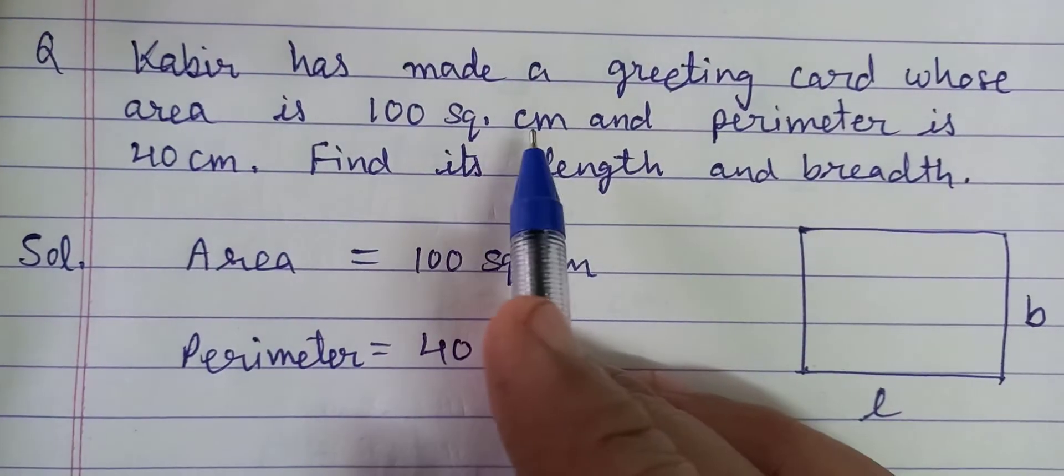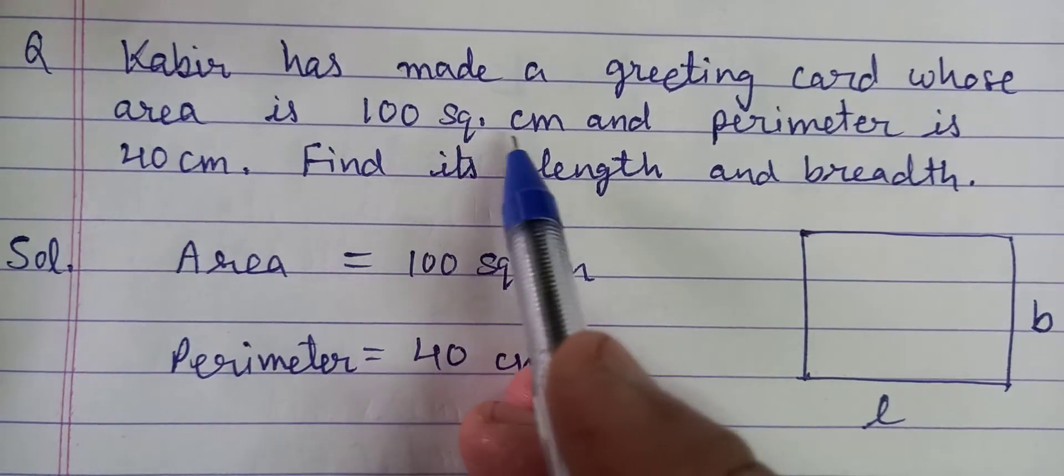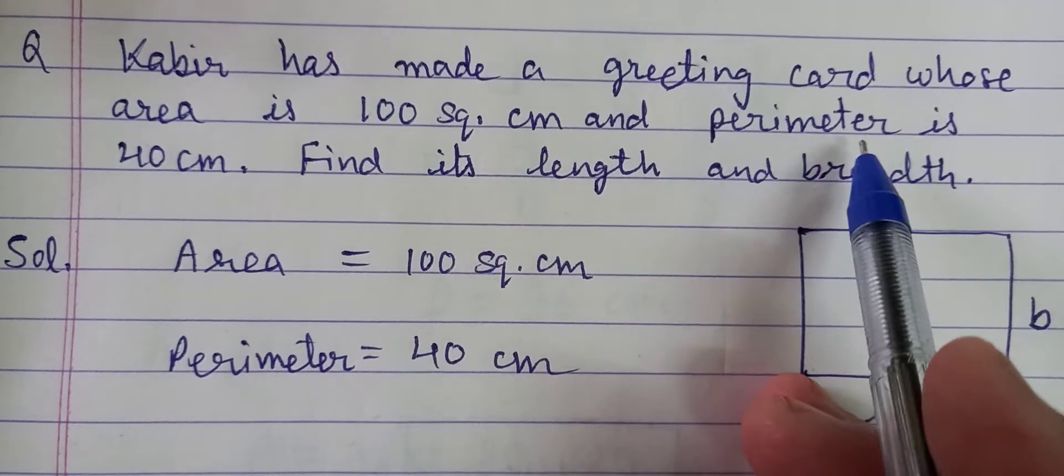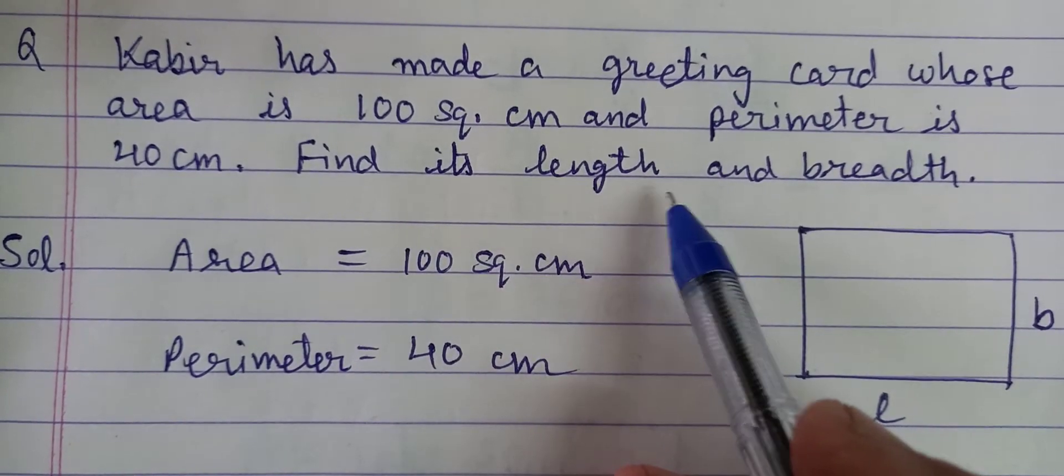Here we have a question. Kabir has made a greeting card whose area is 100 square centimeter and perimeter is 40 centimeter. We have to find its length and breadth.